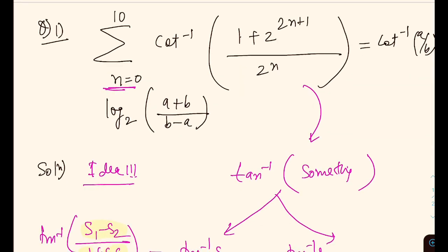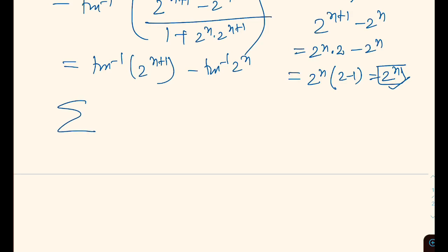Next is now the ritual of summation. Sigma tan inverse 2 raised to the power N plus 1 minus tan inverse 2 raised to the power N, as N is running from 0 to 10.